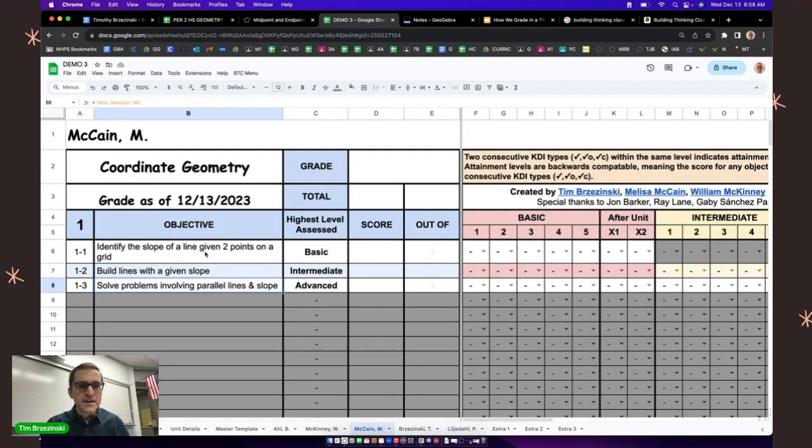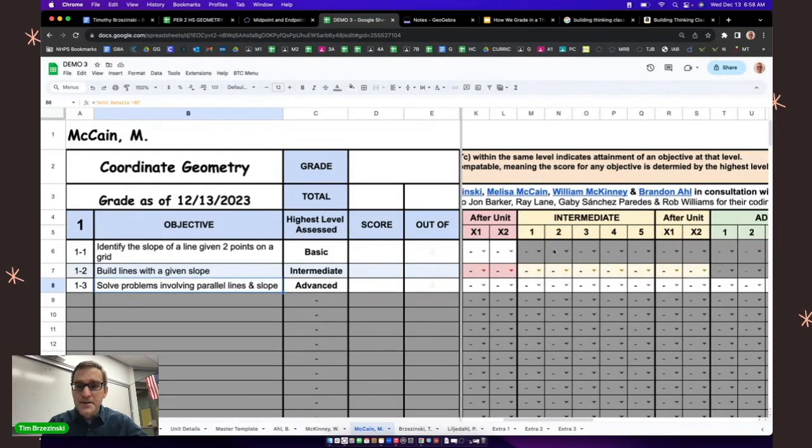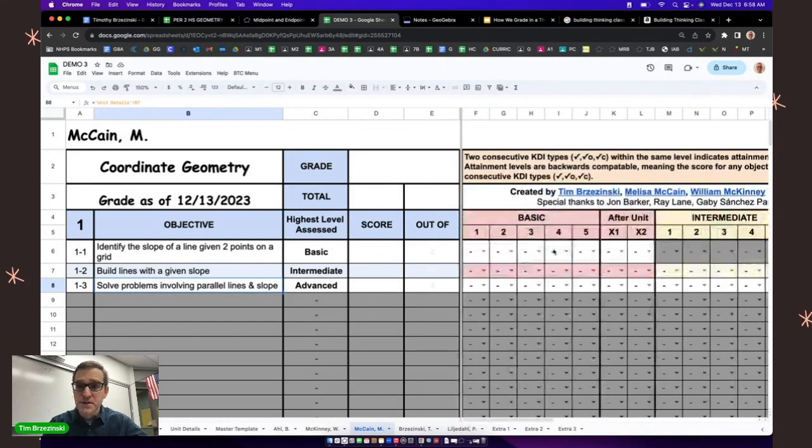For any given objective for a course, teachers can ask questions at a basic level, at an intermediate level, and at an advanced level, as you can see right here. So the PDF that you received has the categories of basic, intermediate, and advanced on it. I'm going to show you how this works.